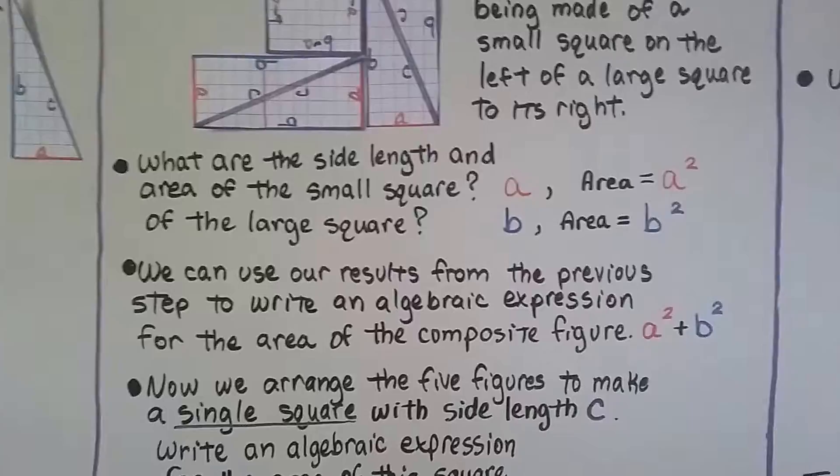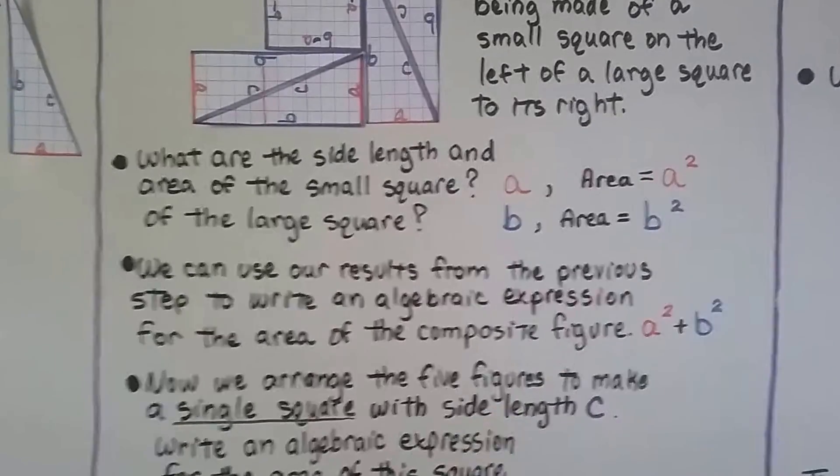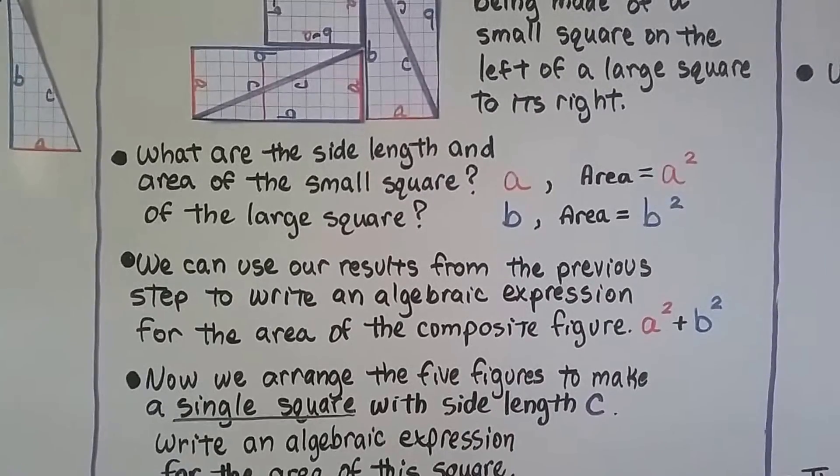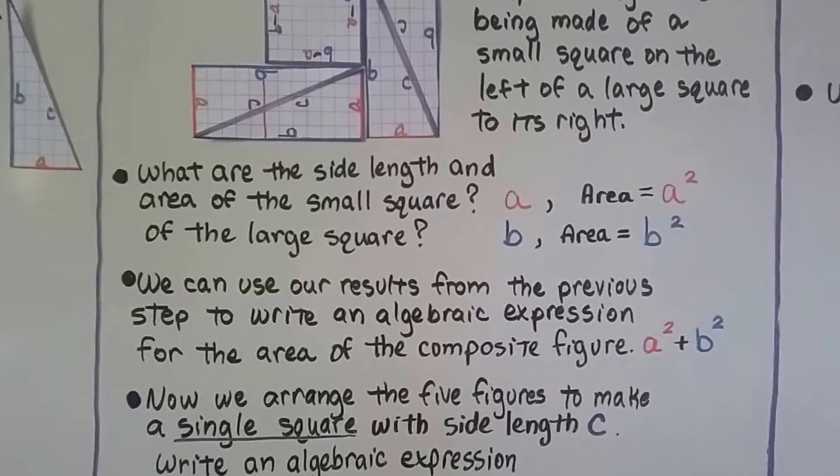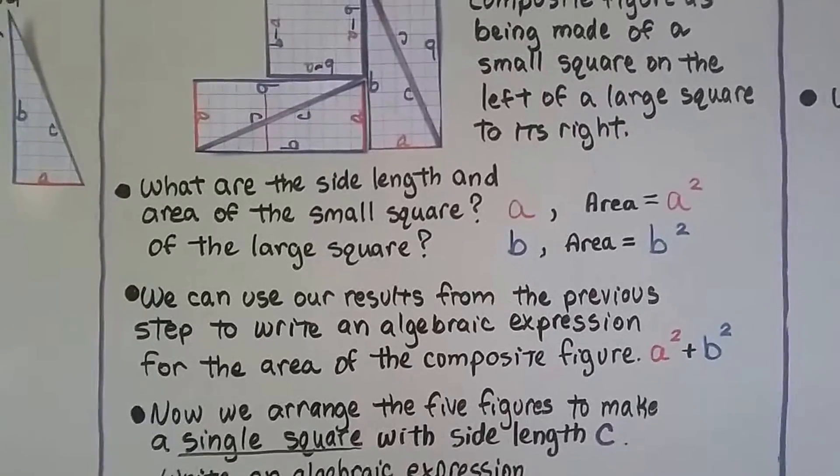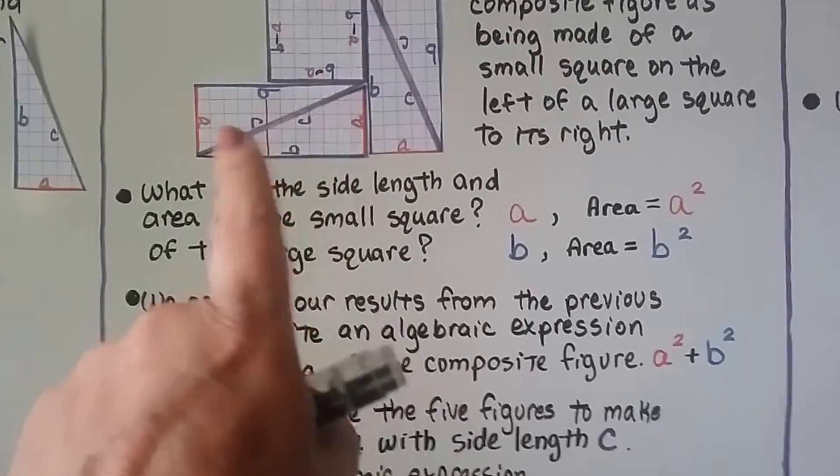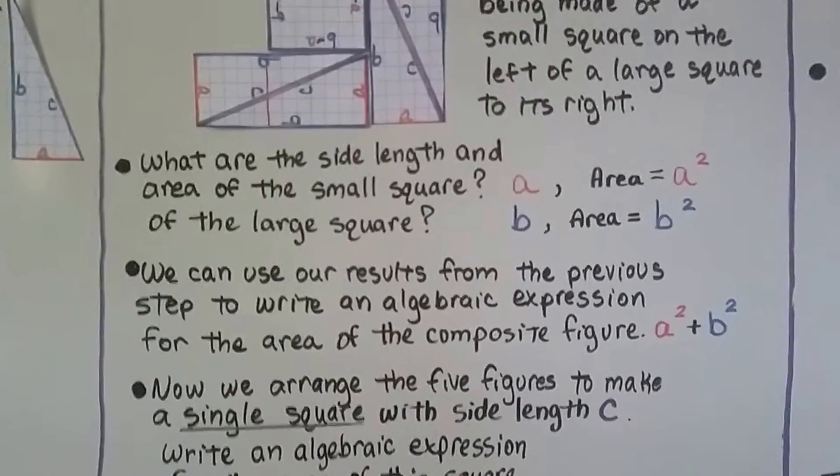And we can use our results from the previous step here to write an algebraic expression for the area of the composite figure. We get a squared plus b squared. We can add these two squares together as a squared plus b squared.